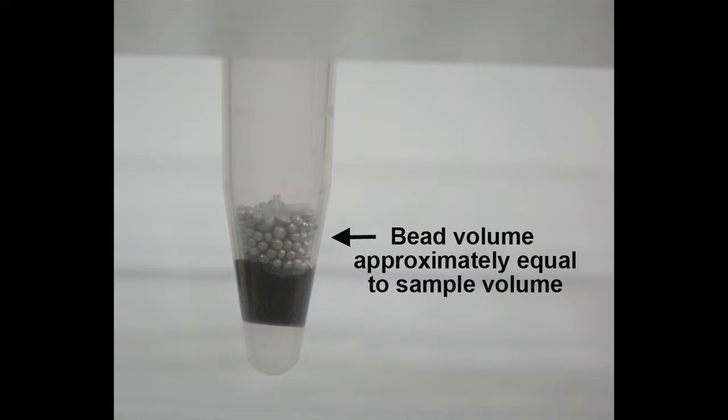I recommend using a volume of beads that is close to the volume of your sample. If you would like to add beads by mass instead of volume, add a mass of stainless steel beads that is at least three times the mass of your sample.